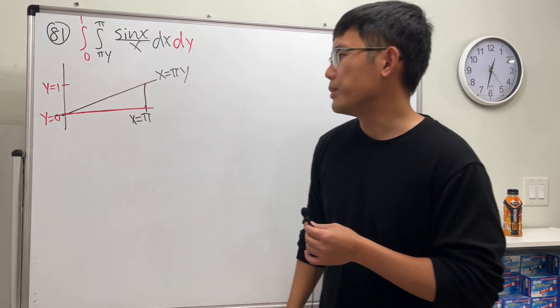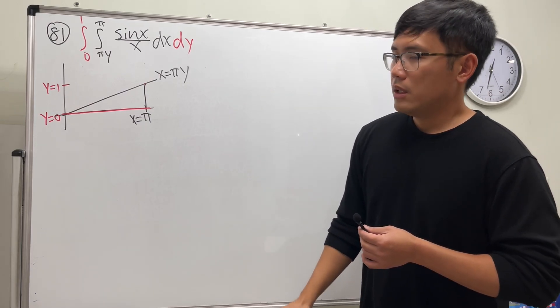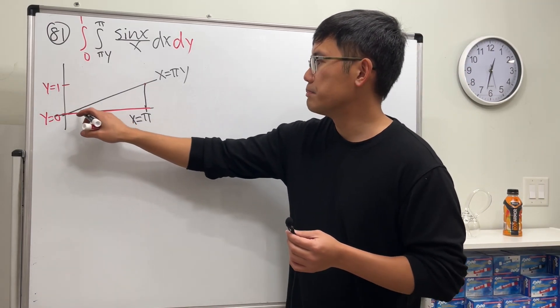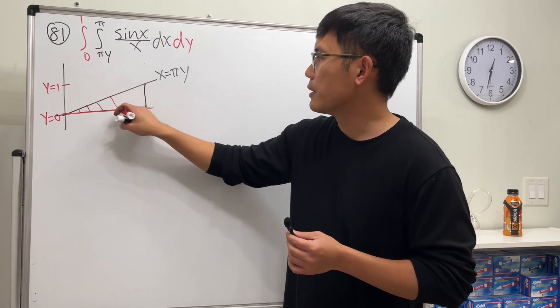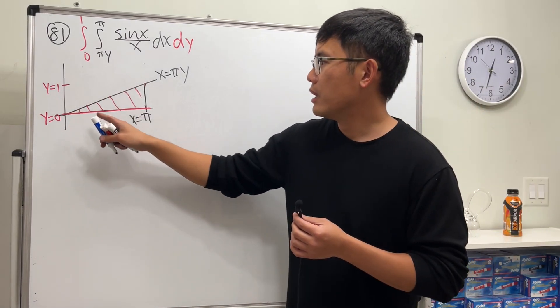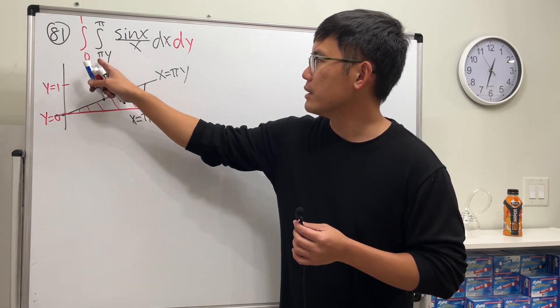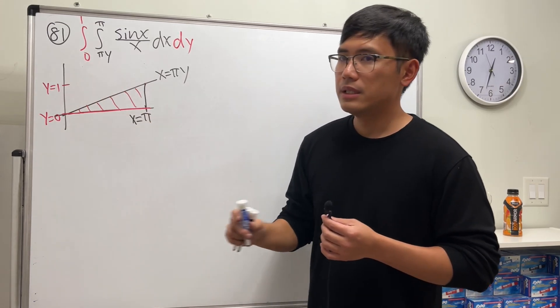And then of course you can double check, this right here will be y equal to one. So the region that we're talking about is this bottom triangle here.